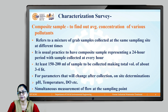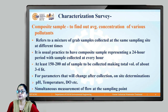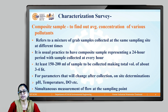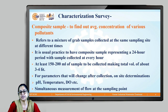At a time, 150 to 200 ml of sample is collected and transferred into a large container with total volume 3 to 4 litres at the end of the 24-hour period. Once the sampling duration is over, you have a mixture of samples collected over the time period. Then you mix the sample thoroughly. Parameters which change with time — that is pH, temperature, and dissolved oxygen — are to be determined on site.